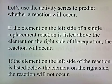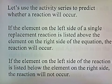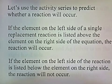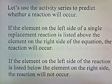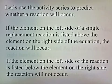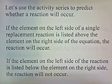Let's use the activity series to predict whether a reaction will occur. The rules are: if the element on the left side of a single replacement reaction is listed above the element on the right side of the equation, the reaction will occur. If the element on the left side is listed below the element on the right side, the reaction will not occur.